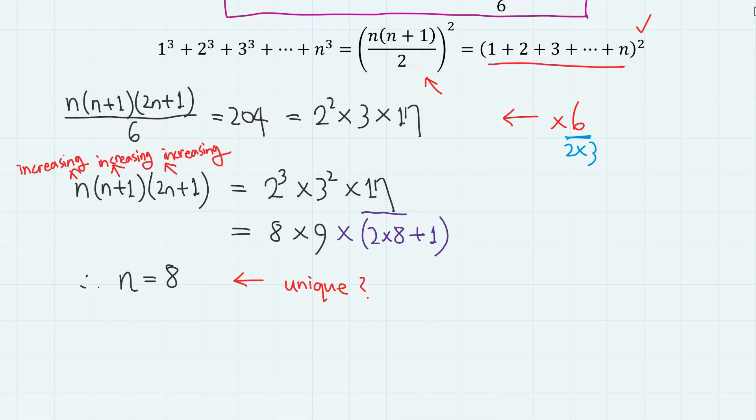n, n plus 1, and 2n plus 1 are all increasing functions when n is greater than or equal to 1. So the product n times n plus 1 times 2n plus 1 is also an increasing function. Therefore, n equals 8 is indeed the unique solution.